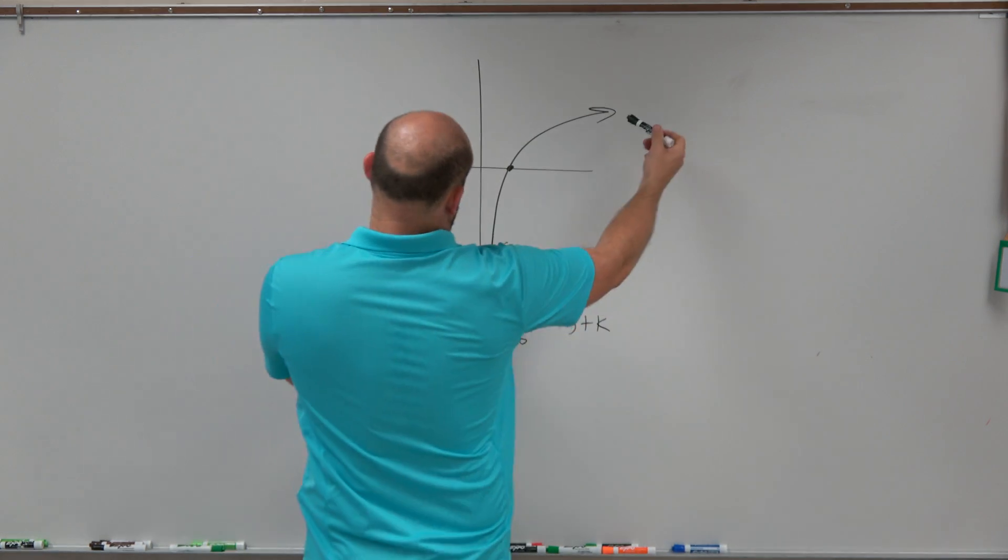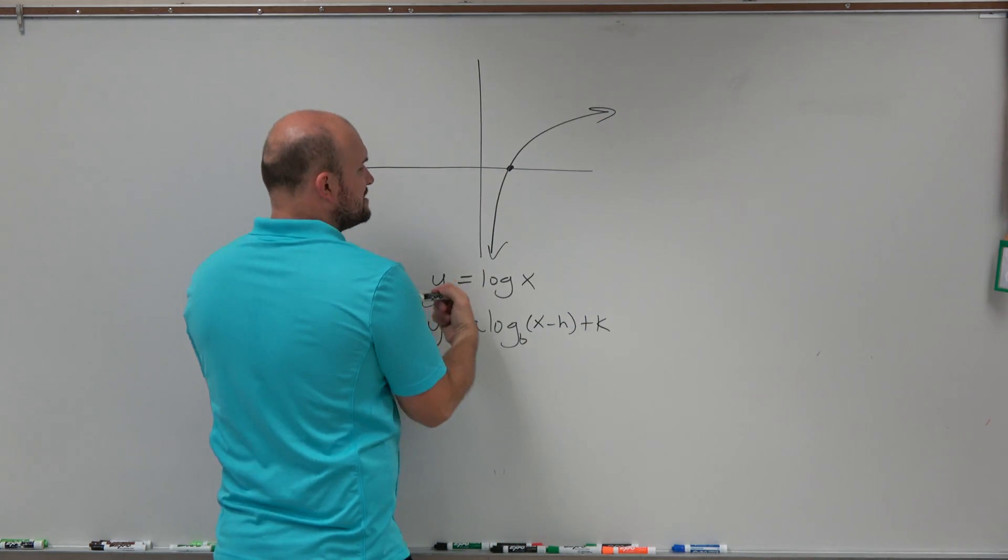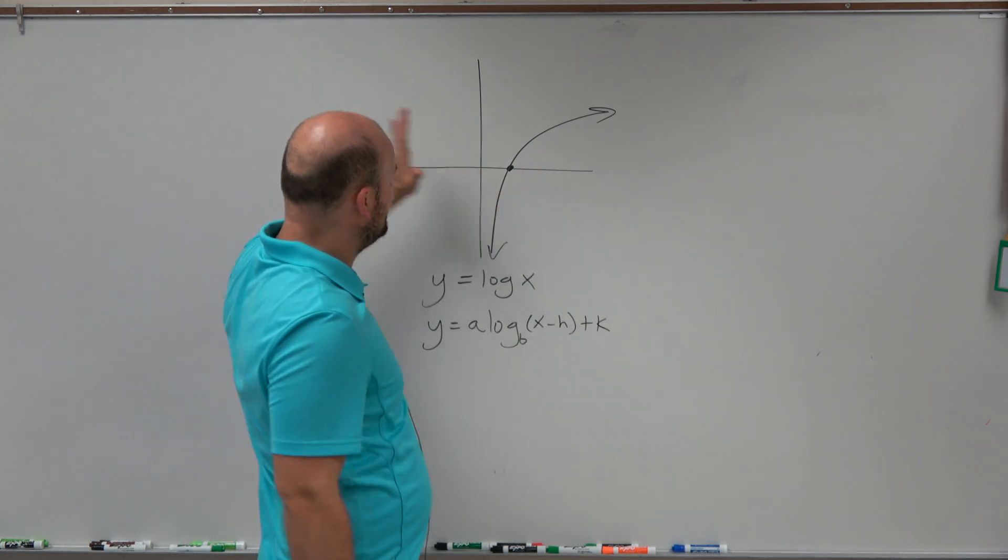And you can see that this graph, as it gets closer to the y-axis, is just kind of shooting down. It never passes the y-axis and it never gets to negative values of x.